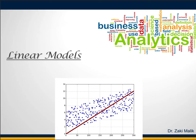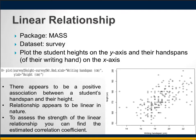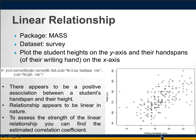Today's lecture is on linear models and linear regression. The first example uses the survey dataset from the MASS package. This dataset contains the heights of males and females in centimeters, the writing hand width span, whether the person is right- or left-handed, and some other attributes. When we plot the writing hand span against height, you can see the data spread out.